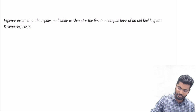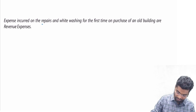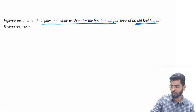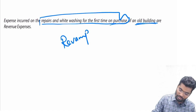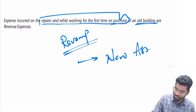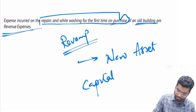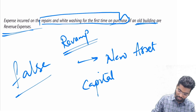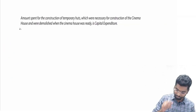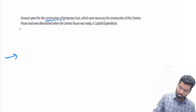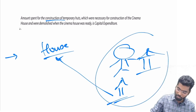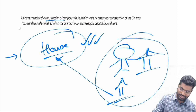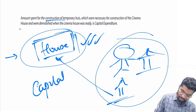This next one should be a cakewalk: expenses incurred on repairs and whitewashing for the first time on the purchase of an old building. Even if the building is old, for me as the buyer I am spending money to revamp it — for me it is still a new asset. So it is definitely capital expenditure, not revenue. The answer would be false. Similarly, amount spent for construction of a building — if you need to build smaller temporary huts around the site to make sure the main house is built, this expenditure is required for the capital asset, so it is also capital expenditure.